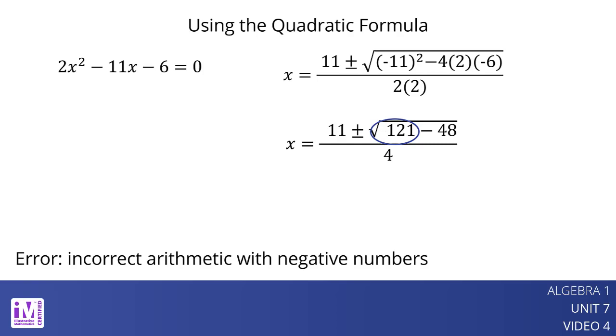Another error is forgetting that a negative number times a positive number is a negative number. 4 times 2 times negative 6 is negative 48, and 121 minus negative 48 is 121 plus 48.